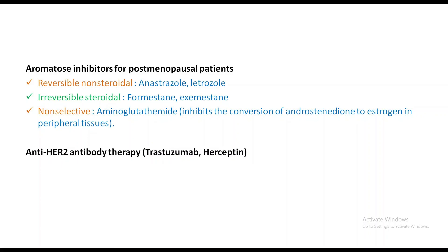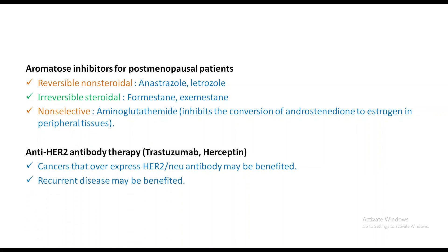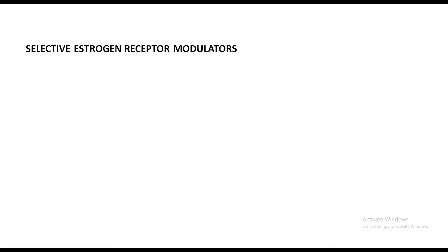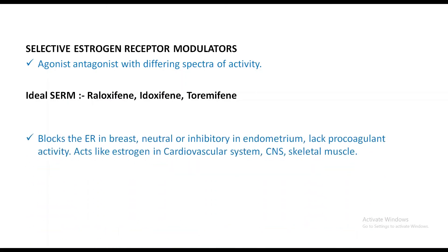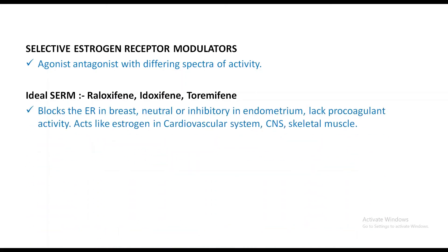Anti-HER2 antibody therapy: Trastuzumab or Herceptin. Cancers that overexpress HER2/neu antibody may benefit. Recurrent disease may also benefit. Selective estrogen receptor modulators (SERMs) are agonist-antagonists with differing spectra of activity. Examples include raloxifene, arzoxifene, toremifene. The ideal SERM blocks the ER in breast, is neutral or inhibitory in endometrium, lacks procoagulant activity, and acts like estrogen in the cardiovascular system, CNS, and skeletal muscle.